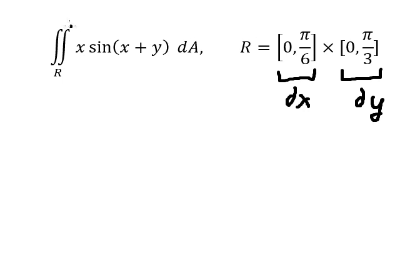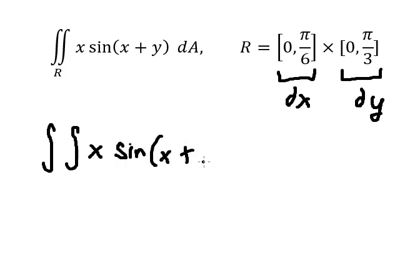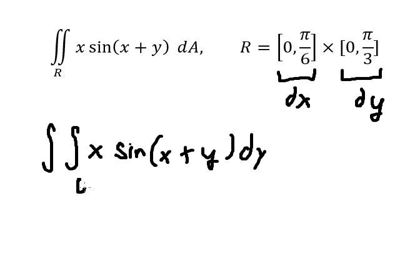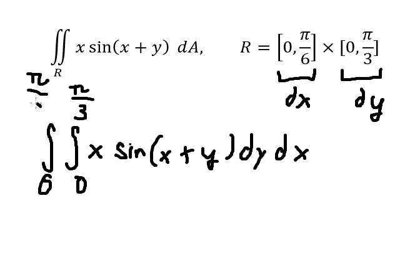Now we can put the bounds goal here. I will select dy first because I want to do this integration in here. For dx, that is from 0 to π/6 — the integration of this one.